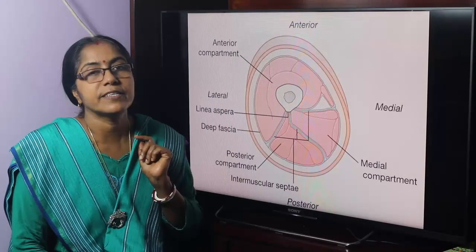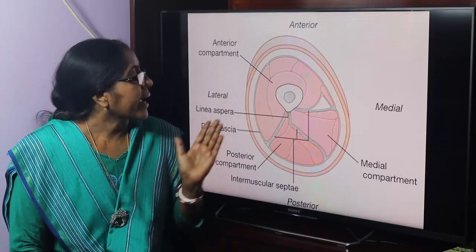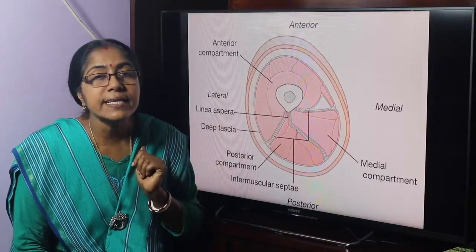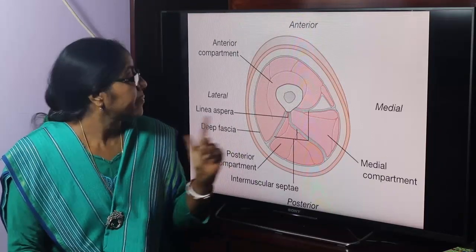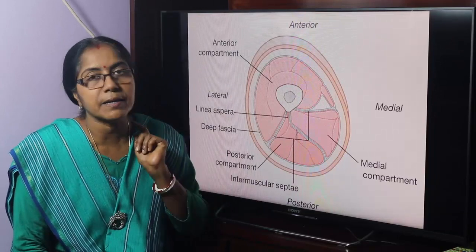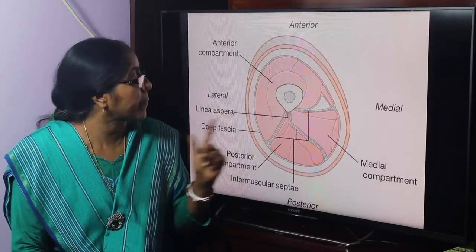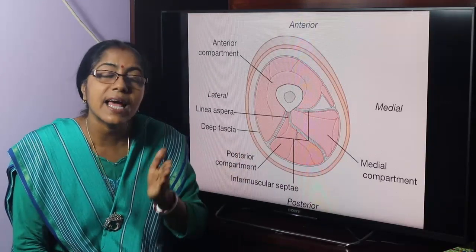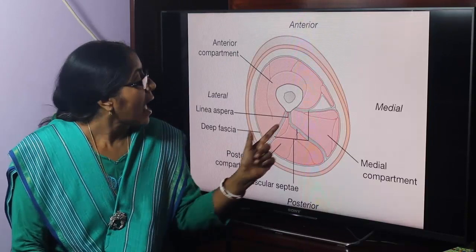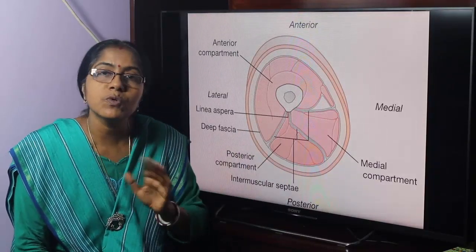From this deep fascia, three intermuscular septa extend inwards to be attached to the linea aspera of the femur. This is the lateral intermuscular septum, this is the medial intermuscular septum, and this is the posterior intermuscular septum. The lateral intermuscular septum is the stronger septum, and the posterior intermuscular septum is poorly defined.